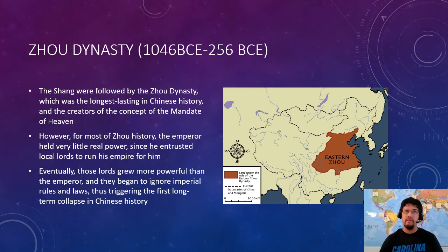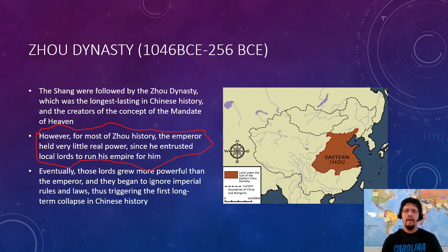The last dynasty we're going to look at is the Zhou dynasty — it's sometimes pronounced more like 'Zhou,' don't worry about it. The Zhou are the longest-running dynasty in Chinese history, but the emperors held very little real power because they trusted local lords to run the country — basically Chinese feudalism, which we'll talk more about in our next unit. Eventually these local lords grew more powerful than the emperor, there was a long-term collapse, setting a pattern. The Zhou created the Mandate of Heaven and gave too much power to local lords, and everything fell apart.